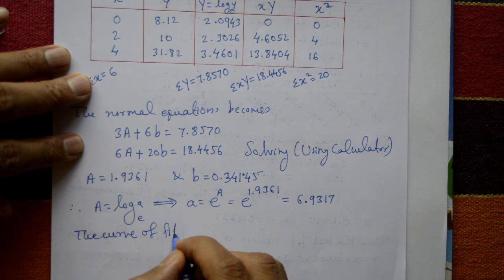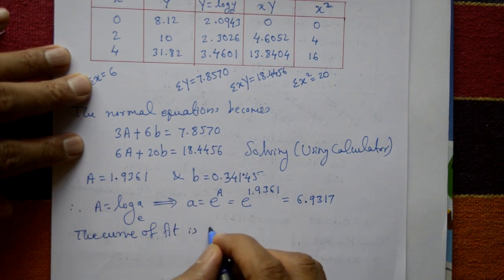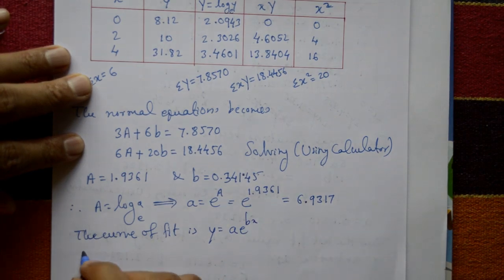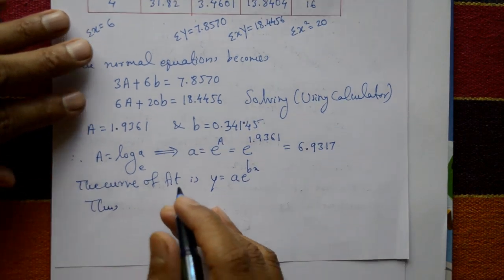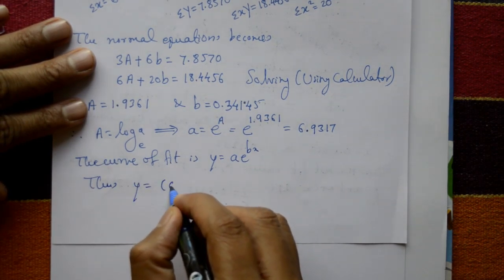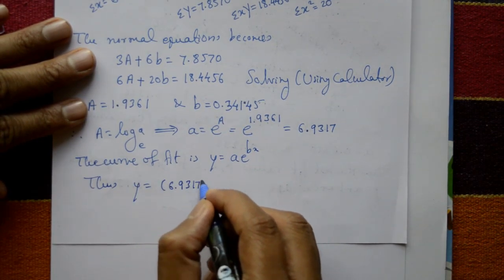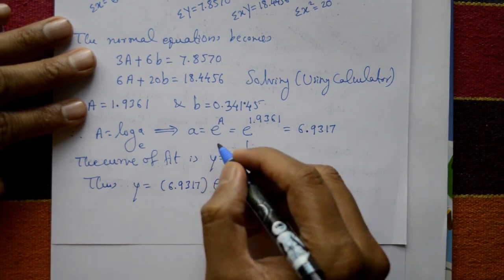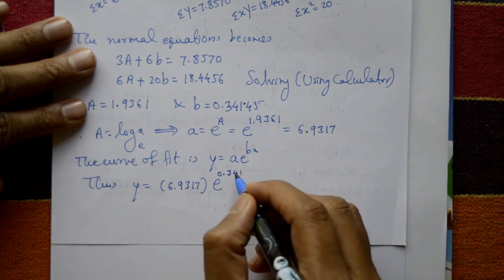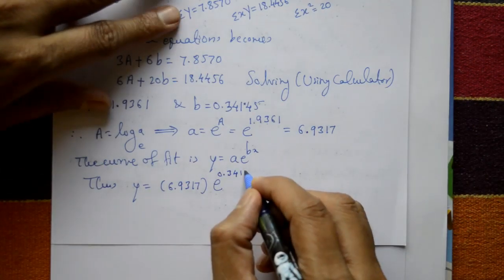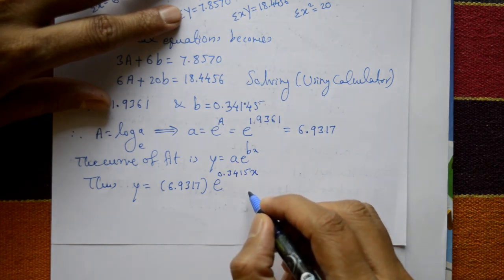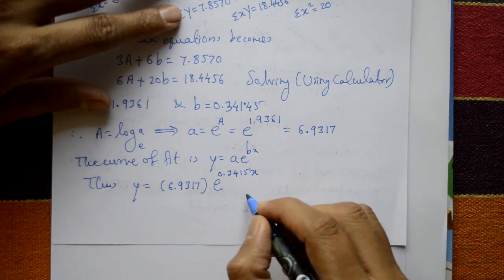Therefore, the required curve of fit is: y = 6.9317 · e^(0.3415x). This is the required solution.